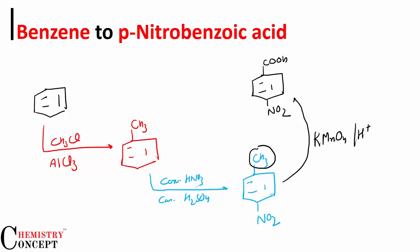Whenever we do this oxidation, the alkyl group over the benzene, irrespective of its length or chain, gets converted into a carboxylic acid. I hope it's clear. If not, you can always ask in the comment section. Please don't forget to like the video, share it with your friends, and subscribe to the channel. Thanks for watching.